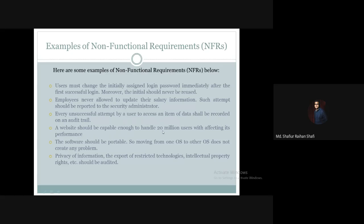A website should be capable enough to handle 20 million users without affecting its performance. The software should be portable — moving from one operating system to another operating system should not create any problem. Privacy of information should also be maintained, along with considerations for export of restricted technologies, intellectual property, and copyright issues.